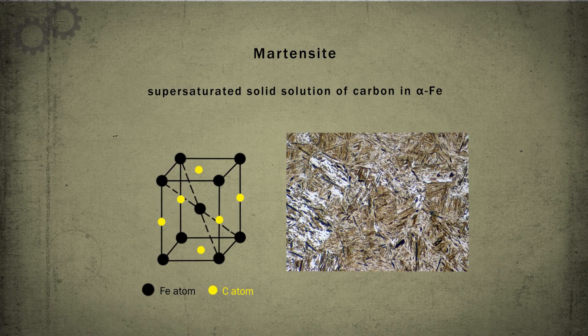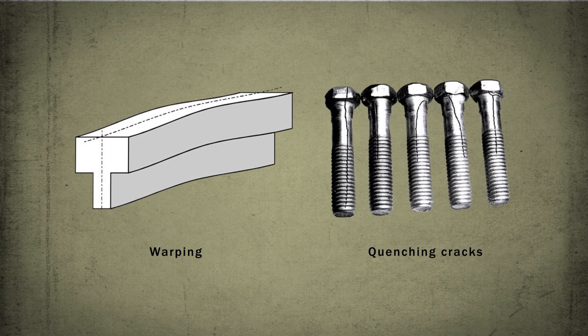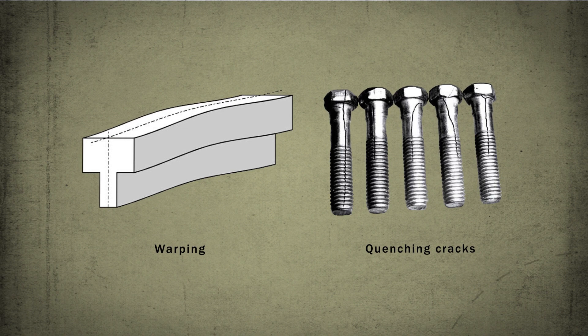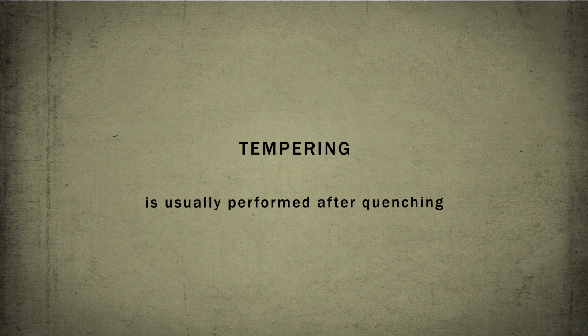Carbon steels are vulnerable to sharp embrittlement during quenching. The ductility of quenched steels may be enhanced and residual stress is relieved by a heat treatment known as tempering.